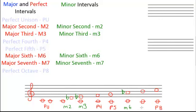And finally, we have our major seventh, which sounds like this. We will lower it by a semitone, making it a B flat, and it now sounds like this. There we have all of our major intervals lowered by a semitone to become minor intervals.